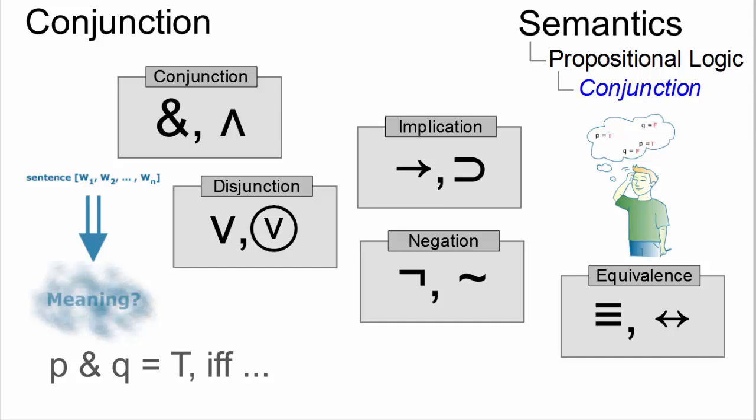In propositional logic, conjunction is the label for one of five logical connectives used to combine simple propositions into complex ones.